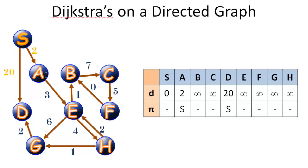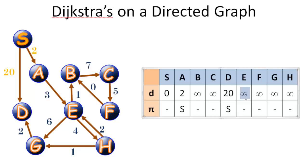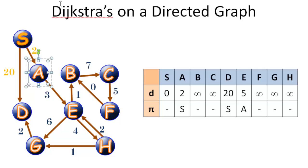We'll move on to the next vertex A. Why choose A? Because it is the closest vertex to the source at a distance of only two, as we can see in the table. D is at a distance of 20 and all others are infinity. So we jump to vertex A and relax all its outbound edges. We only have one edge going to E at a cost of three. Since we reach A in two and add three, we can reach E in five with predecessor A. Now we're done with vertex A and will mark it as visited.